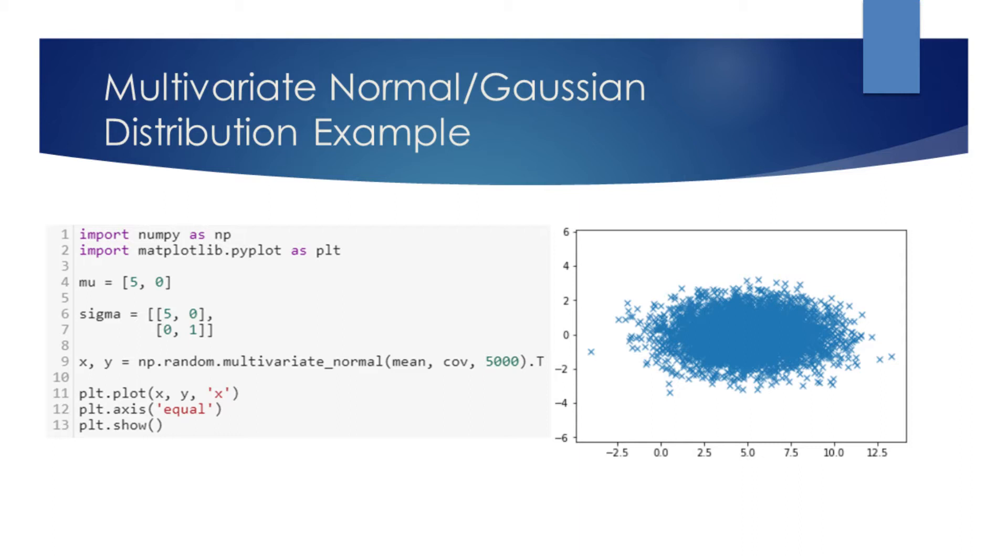On line 9, we sample 5000 times from the multivariate normal distribution. We can see the plot of these samples on the right.